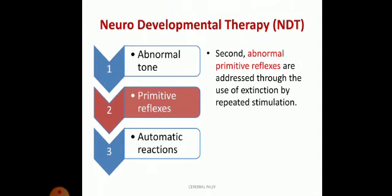The second NDT focus is on primitive reflexes. Primitive reflexes have adaptive value but should be integrated later on — otherwise they interfere with daily activities. For example, asymmetrical tonic neck reflex (ATNR): when the child turns their head, the face-side limbs extend. If this persists, the child will never be able to feed himself because whenever he sees food, the elbow extends. Therefore, we work on inhibition of abnormal primitive reflexes through repeated stimulation exercises.